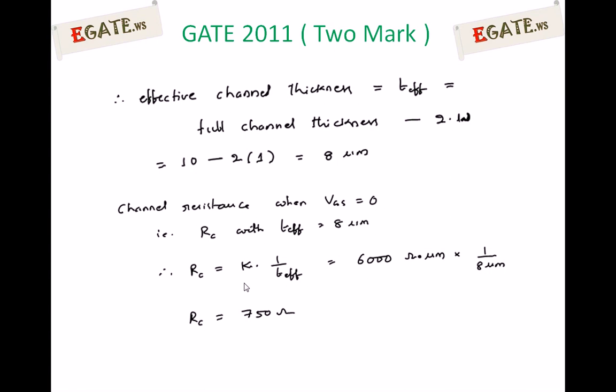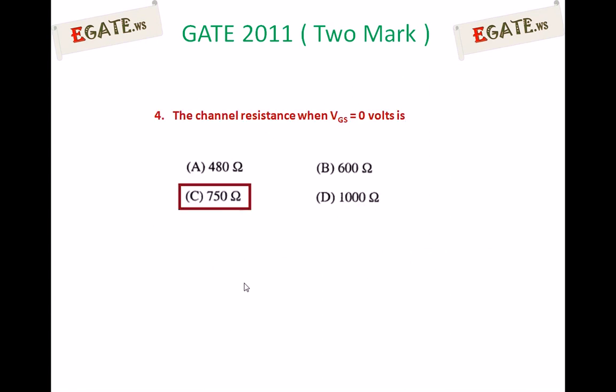So the channel resistance when VGS equals 0 is 750 ohms. The right answer for this question is 750 ohms.